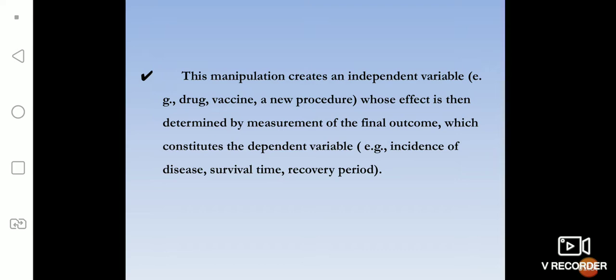This manipulation creates an independent variable which will affect the dependent variable — that is, whose effect is determined by measurement of the final outcome. For example, if the independent variable is a drug or vaccine, the dependent variable will be the occurrence of the disease, that is the incidence of disease, or survival time, or recovery period.